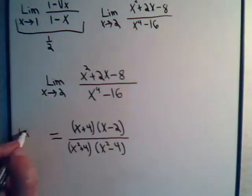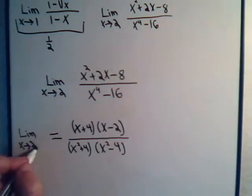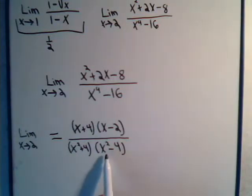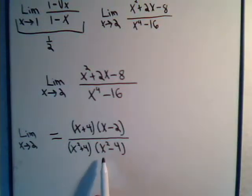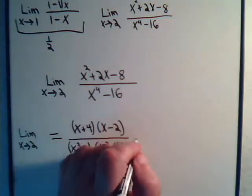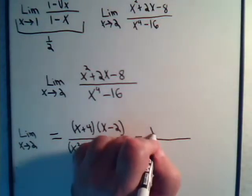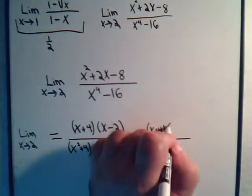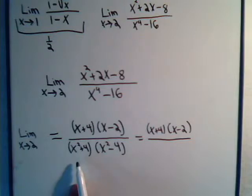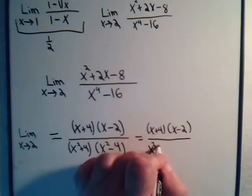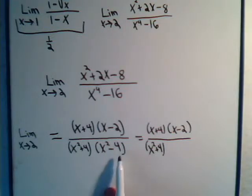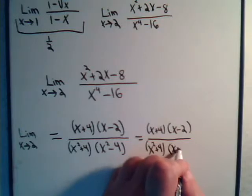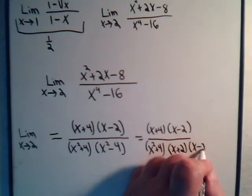So the denominator is x squared plus 4 times x squared minus 4, and we want the limit as x approaches 2. We can't just plug in x yet — that gives zeros. And x plus 4 and x squared plus 4 don't cancel. But x squared minus 4 is again a difference of two squares: x squared minus 2 squared, which factors as x plus 2 times x minus 2.